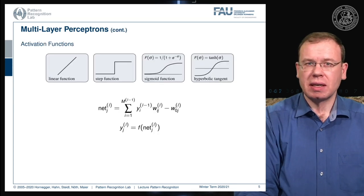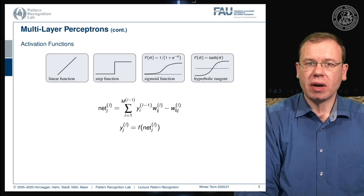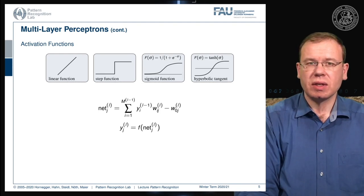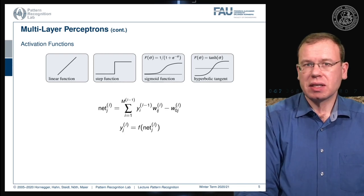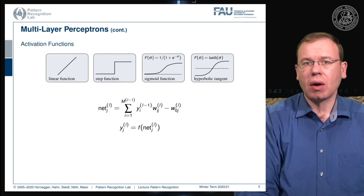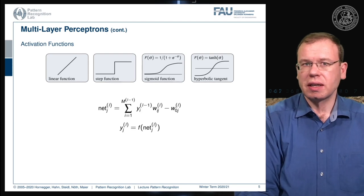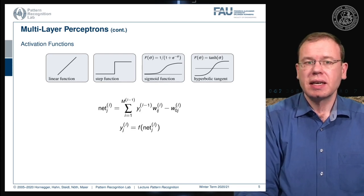It's very important that we introduce non-linearity. Rosenblatt originally used the step function. If we used only linear functions, everything would collapse down to a single big matrix multiplication. In every fully connected layer, you're essentially computing a matrix multiplication of the activations of the previous layer with the next one. The activation function is what is not modeled as a matrix — it is applied element-wise.